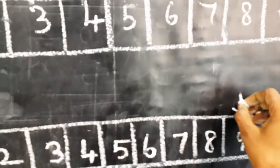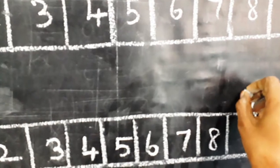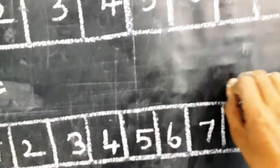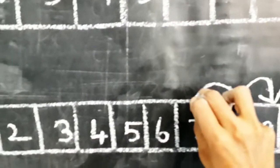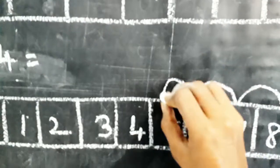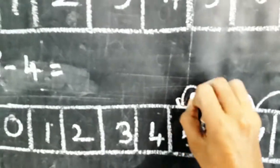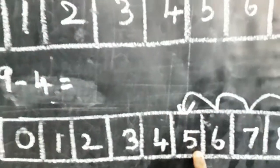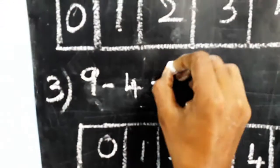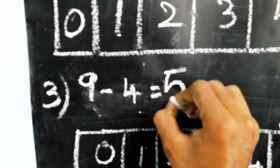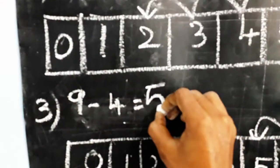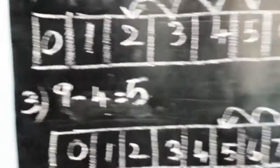So you can go backward of four numbers: one, two, three, four. So we reached on which number? Yes, five. So nine minus four is equal to five. Answer is five.